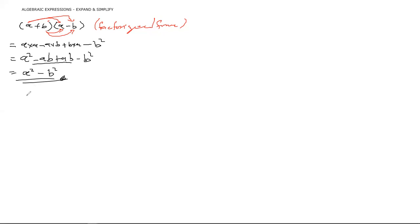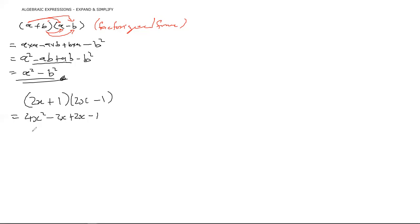Let's try another one. What if we have (2x + 1)(2x − 1)? I'm going to FOIL and skip some steps. This gives 4x² minus 2x plus 2x minus 1, and again the middle terms cancel, leaving 4x² minus 1. So is there a pattern here?